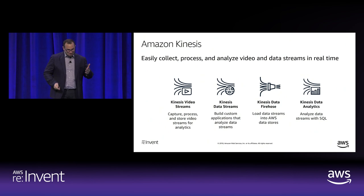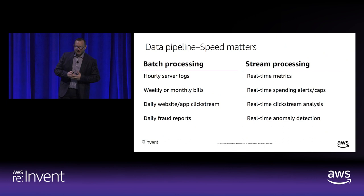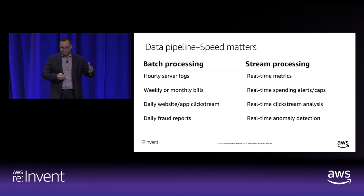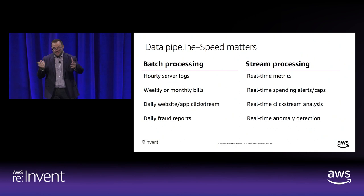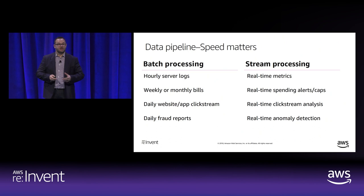When you think about data pipelines and how they're evolving, we're moving from batch-oriented pipelines — hourly server logs, daily data feeds — toward real-time metrics: real-time clickstream analysis, anomaly detection, fraud detection running on real-time. All these events coming in real-time allow you to do it with Kinesis, where multiple applications can access the same data stream simultaneously for different purposes.